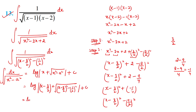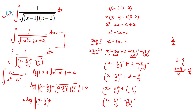Applying the formula ∫dx/√(x² - a²) = log|x + √(x² - a²)| + C, we substitute x with (x - 3/2) and a with (1/2). The final answer simplifies to log|x - 3/2 + √(x² - 3x + 2)| + C.